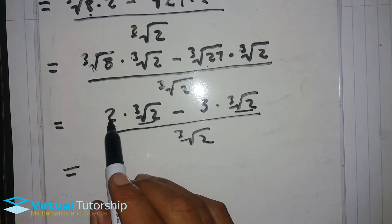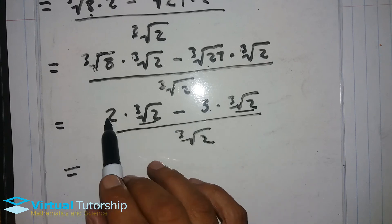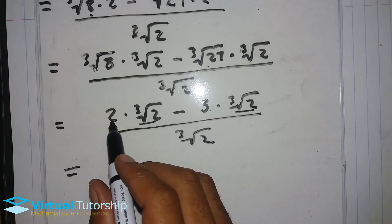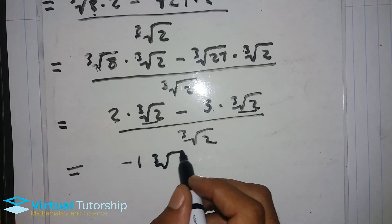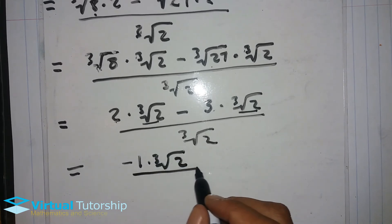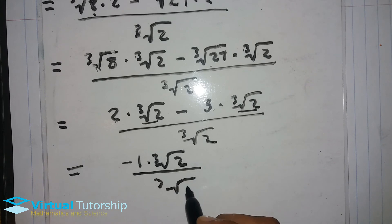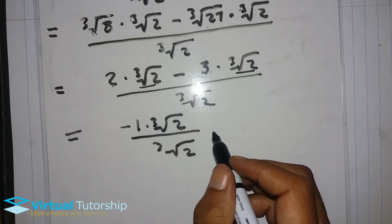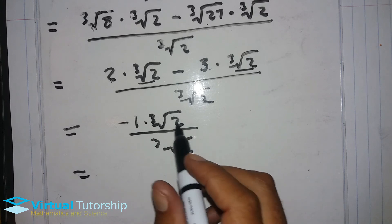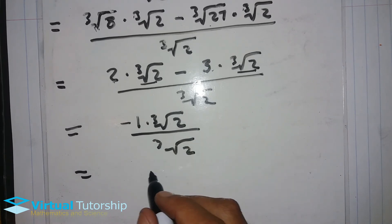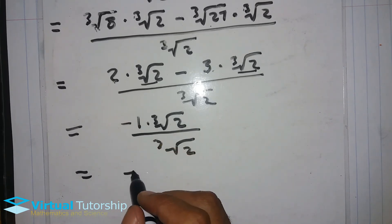These are like terms, so we subtract the coefficients: 2 minus 3 is minus 1 times the cube root of 2 over the cube root of 2. This root divided by this root is 1, so the answer is minus 1.